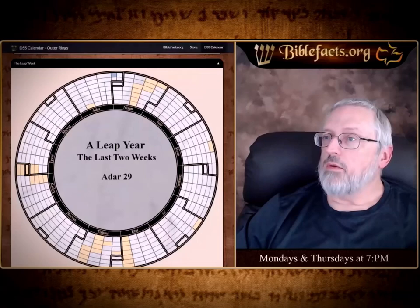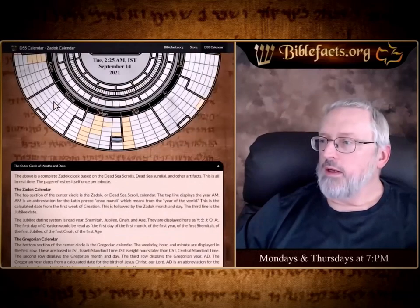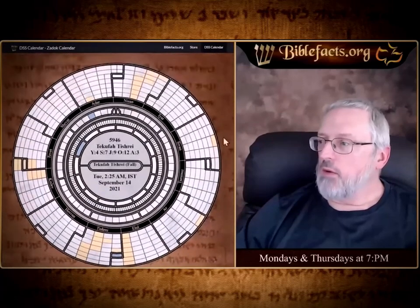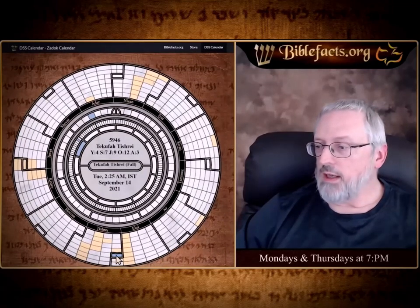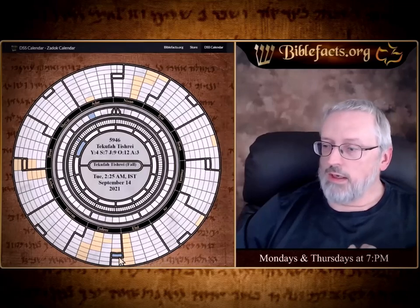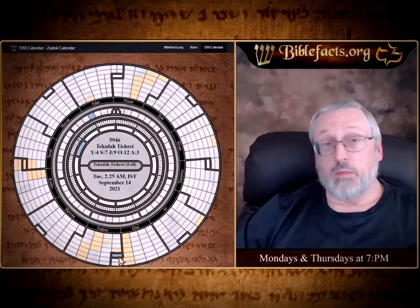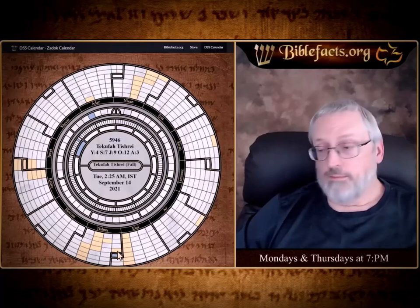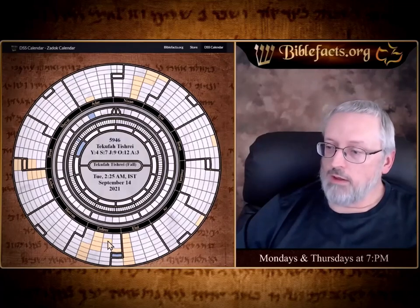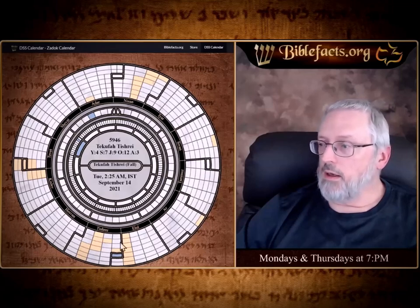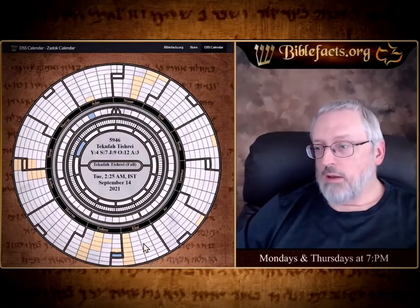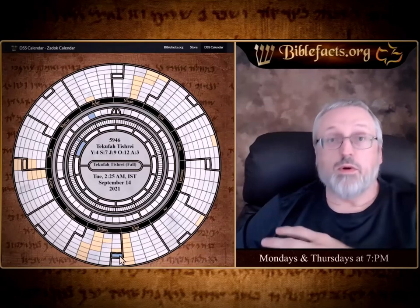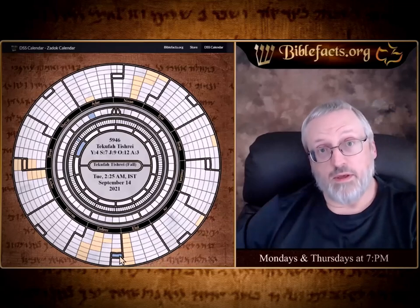Coming back to the top, we can see it is Tekufa Tishrei right here — that's the one highlighted. We're getting ready for tomorrow night to start Rosh Hashanah, then Yom Kippur, Tabernacles, Hanukkah. Right now it's not Elul and it's not Tishrei either — it's between the months, or as scripture says, it's the head of the months, the Kodesh.